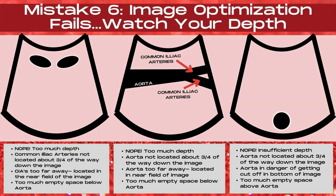Continuing along with mistake number six, image optimization fails when imaging the aorta — now let's talk about depth. In the image to the far left, there's too much depth when imaging these transverse common iliac arteries. The common iliac arteries should be located about three quarters of the way down the image, but here they are too far away and too small, located in the near field section.